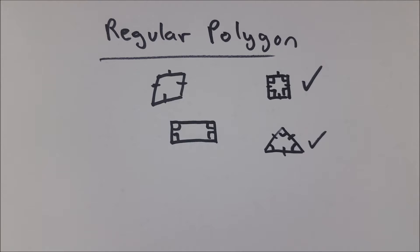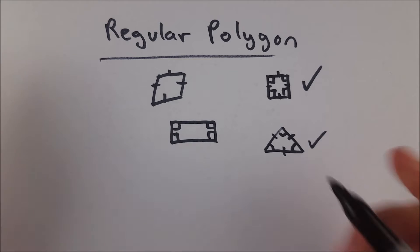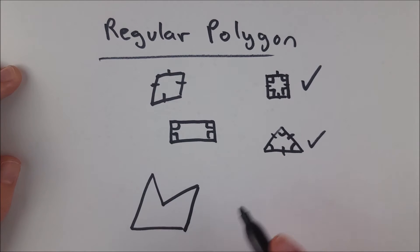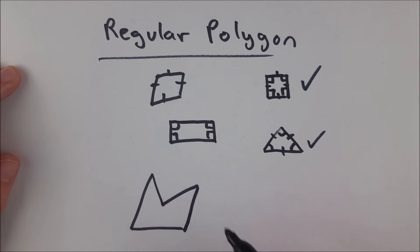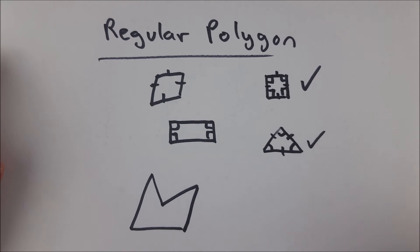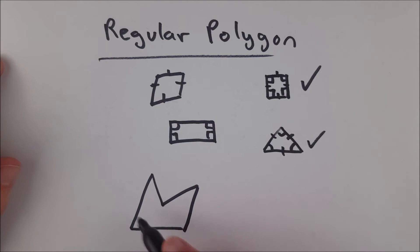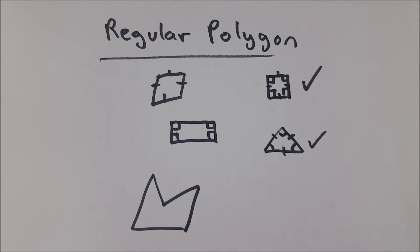A regular polygon can't be concave, because concave polygons — something like this — can't be regular by definition. A concave polygon has an angle that measures greater than 180 degrees, and you're forced to have angles that aren't that big in order to actually close the shape. So because of that, there's no such thing as a regular concave polygon.